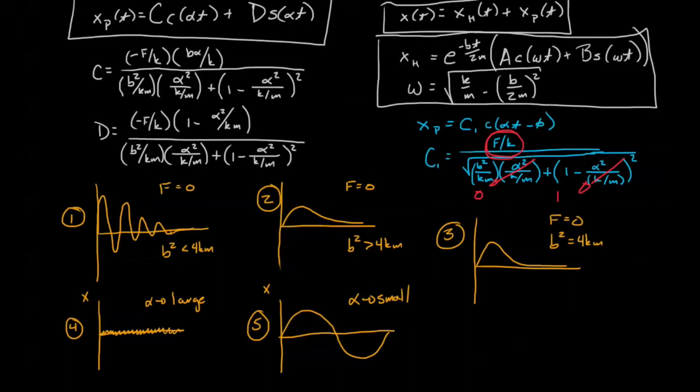Now thus far, we've been very careful to keep the homogeneous solution and the particular solution completely separate. For instance, numbers one, numbers two, and number three, we're only looking at the homogeneous solution. Then, for number four and number five, we're looking at the steady state or the particular solution.